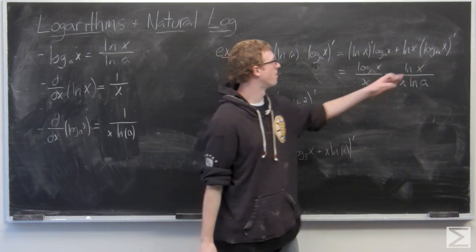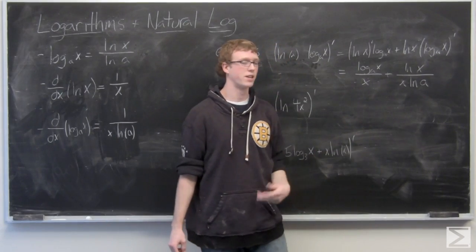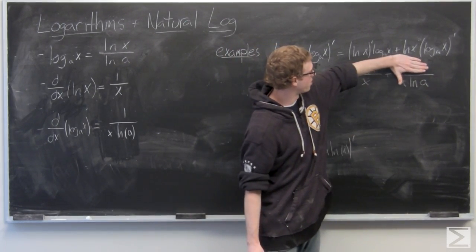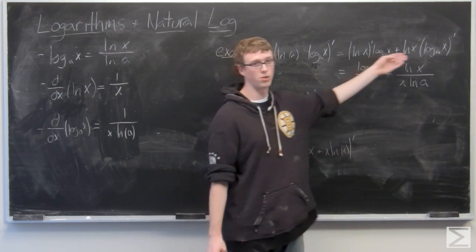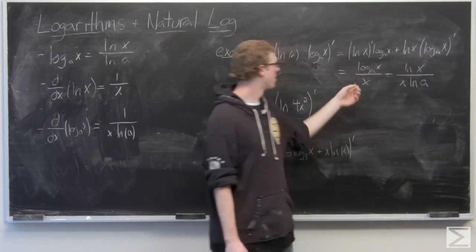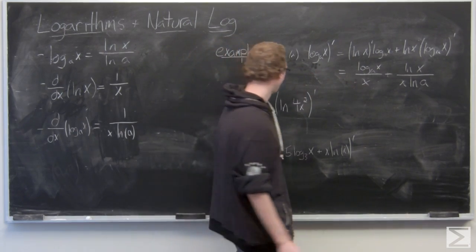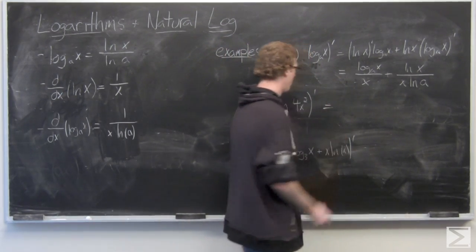Again, if we use the change of base formula to make this ln x over ln a, it's very simple to see that without that term, that's what the derivative of that is, and then you multiply through by what f of x is. So using the product rule, that's the derivative of this first expression.